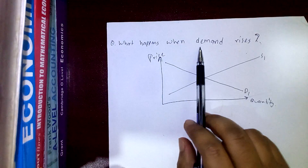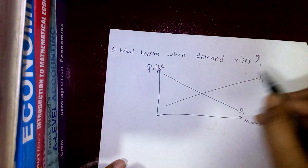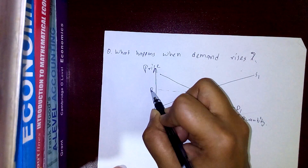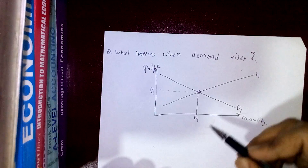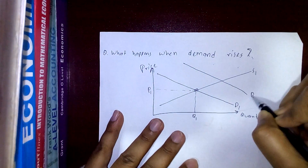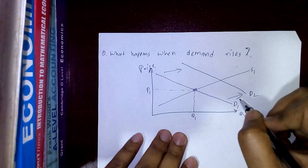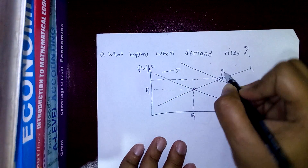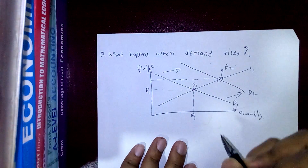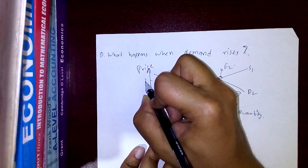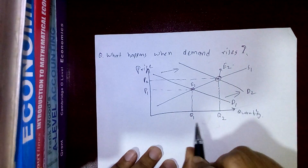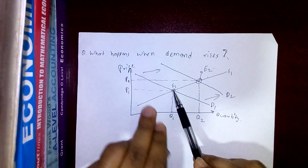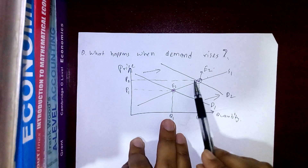The first question is: what happens when demand rises? When demand rises, the demand curve shifts rightward. For example, in a price and quantity diagram we have an initial demand curve D1 and a supply curve S1. The equilibrium is E1, with price P1 and quantity traded Q1. When demand rises, the demand curve shifts rightward.